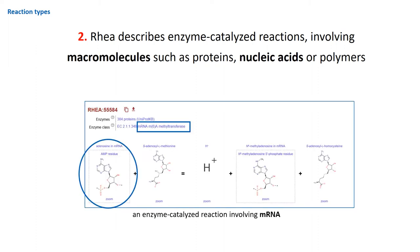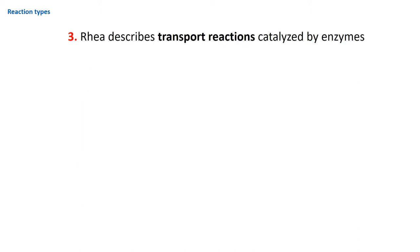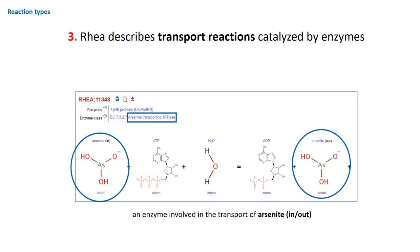As an example, we see here an enzyme-catalyzed reaction leading to the methylation of mRNA. RIA also describes transport reactions which are catalyzed by enzymes. The example we see here shows the transport of arsenide into the cell and out of it, catalyzed by an ATPase.